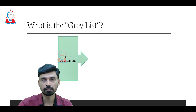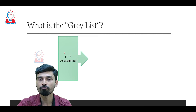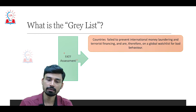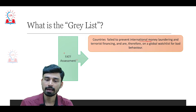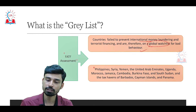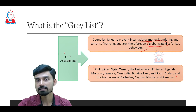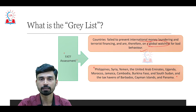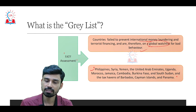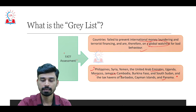FATF is involved in periodic and regular assessments of various countries. Countries which fail to prevent international money laundering and terrorist financing are put on the global watch list for bad behavior. Currently there are 23 countries under the FATF grey list after Pakistan's removal. Some major countries on the grey list include Philippines, Syria, Yemen, UAE, Uganda, Morocco, Jamaica, and tax havens such as Barbados, Cayman Islands, and Panama.